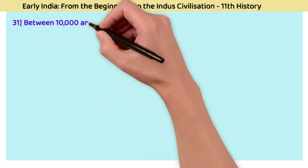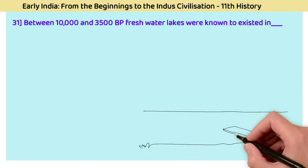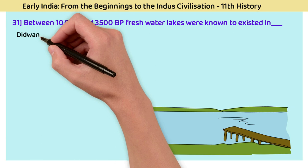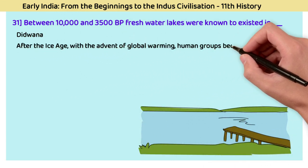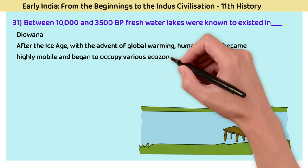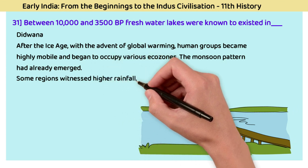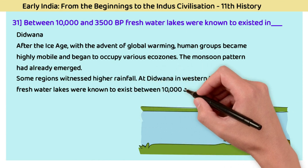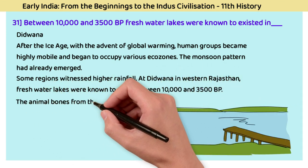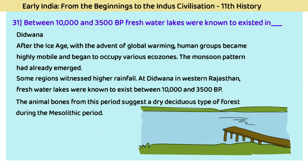Question 31: Between 10,000 and 3,500 BP, fresh water lakes were known to exist in? The answer is Didwana. After the Ice Age, because of global warming, human groups became highly mobile and began to occupy various eco-zones. At Didwana in western Rajasthan, fresh water lakes were known to exist between 10,000 and 3,500 BP. Animal bones from this period suggest a dry deciduous type of forest during the Mesolithic period.